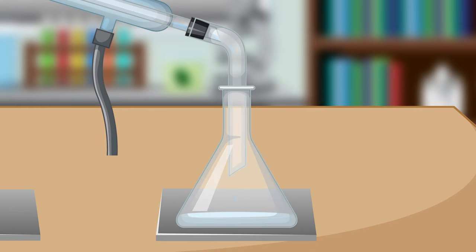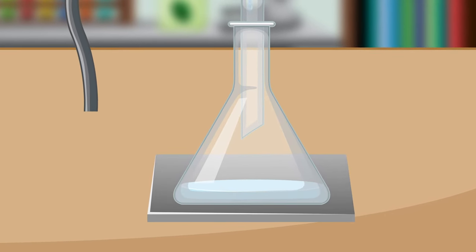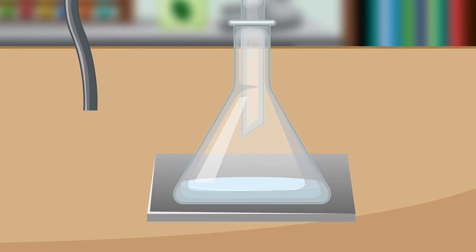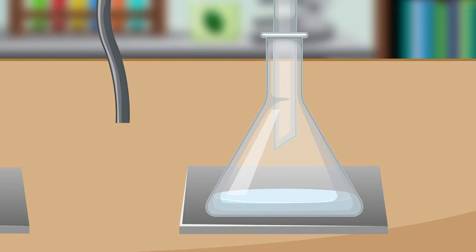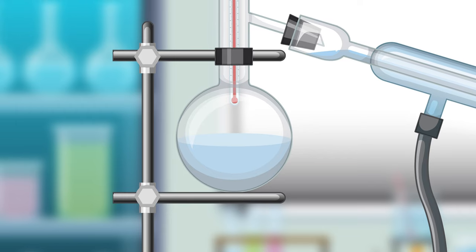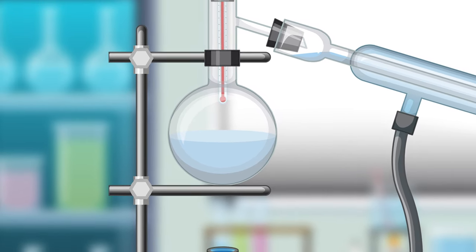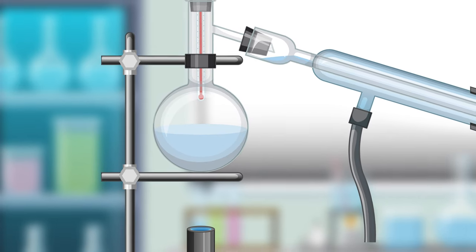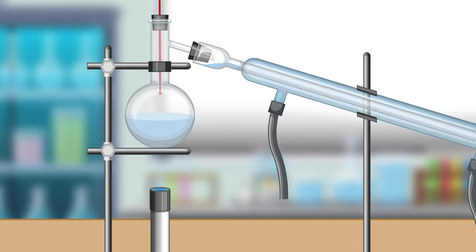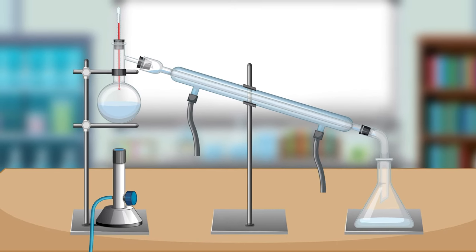Step 7. Completion of distillation. The distillation process continues until all of the desired substance has been vaporized and condensed into the receiving flask. The substance remaining in the distillation flask, which has a higher boiling point, is called the residue, or the still bottom. By carefully controlling the temperature and collecting the distillate at the appropriate boiling point, we can separate and purify the desired substance from a mixture using the distillation apparatus.